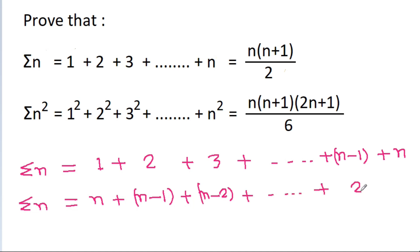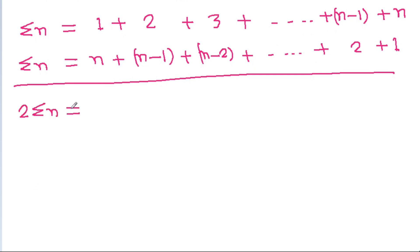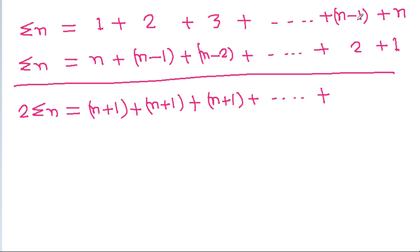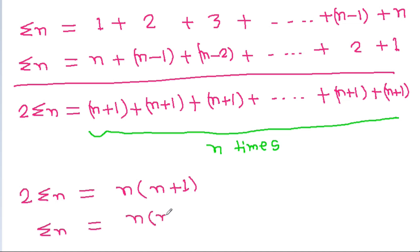If we add both equations then we get 2·sigma(n) is equal to (1+n) plus (2 + n minus 1) plus (3 + n minus 2) plus dot dot dot plus (n minus 1 + 2) plus (n + 1). Each pair sums to n+1, and we get n+1 repeated n times, so 2·sigma(n) = n(n+1), giving us sigma(n) = n(n+1)/2.